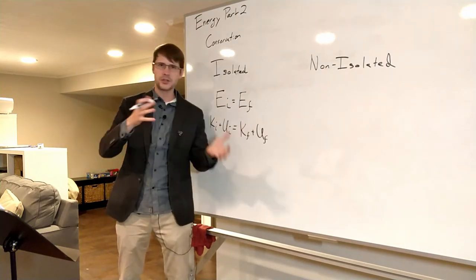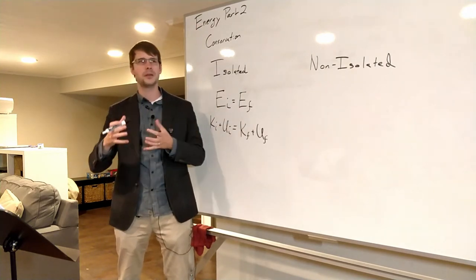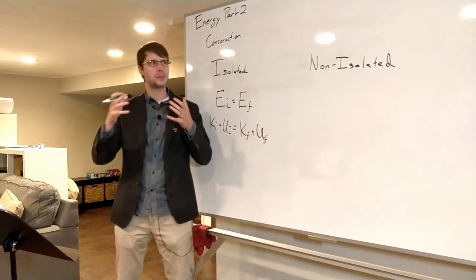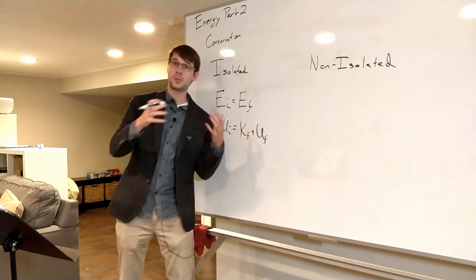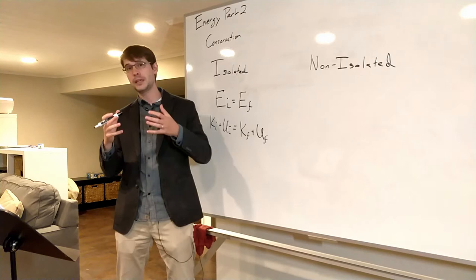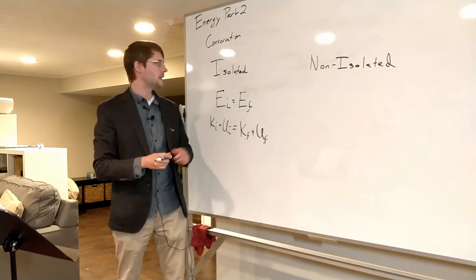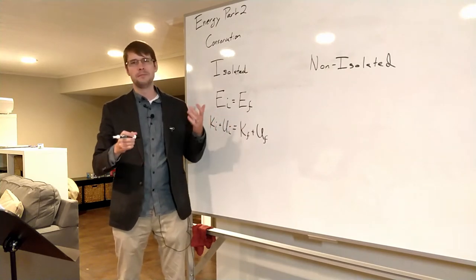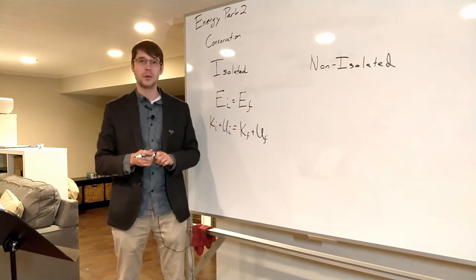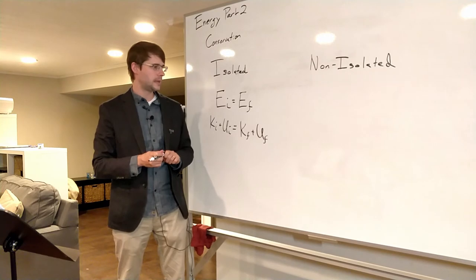So it's kind of like you're sloshing this energy around from one type to another—going from kinetic to potential, gravitational potential to spring potential, back to gravitational potential, something like that—and that's what can happen in an isolated system. All of the energy is conserved, and that would be an ideal system as well.